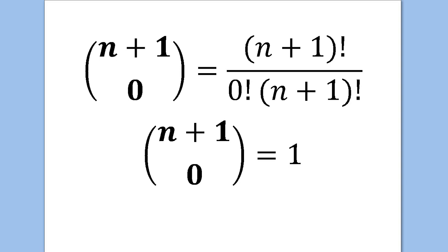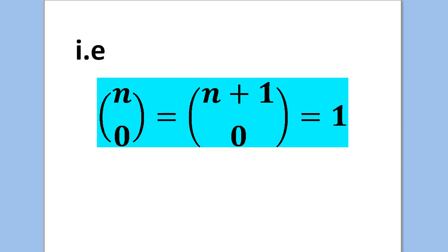By a similar argument, n plus 1 choose 0 equals n plus 1 factorial over 0 factorial times n plus 1 factorial, which is also just 1 — the 0 factorial is 1, and you're dividing n plus 1 factorial by itself. So n choose 0 equals n plus 1 choose 0 equals 1.